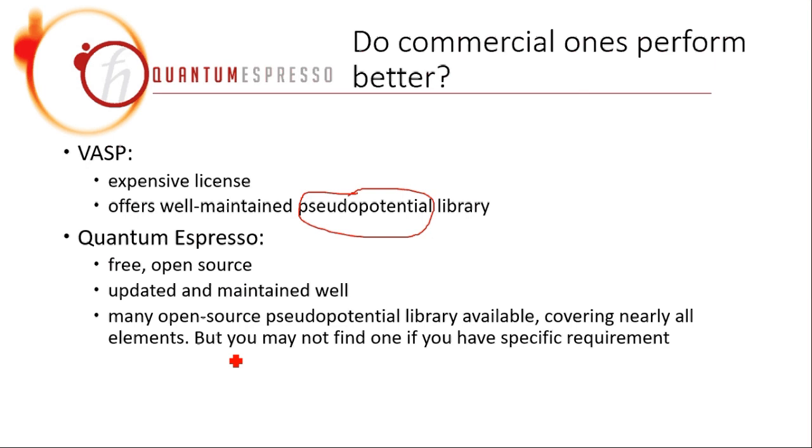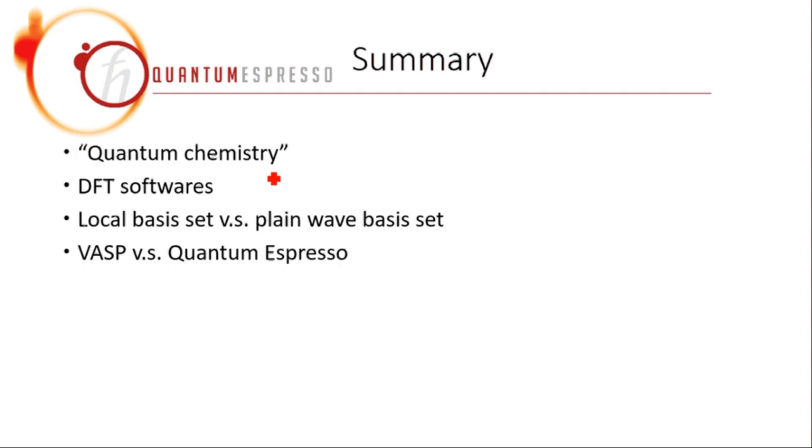You can use Quantum Chemistry to calculate material properties. And DFT is one of the, maybe the most widely applied method in Quantum Chemistry. And there are many DFT softwares, usually they can be characterized by local basis set or plane wave basis set. And in the case of plane wave basis set, we have the most two common choices, VASP and Quantum Espresso.